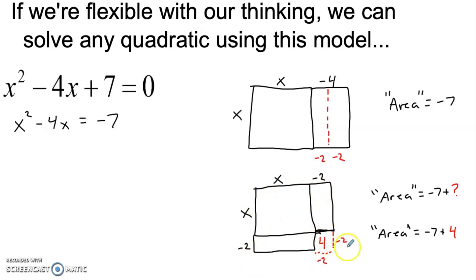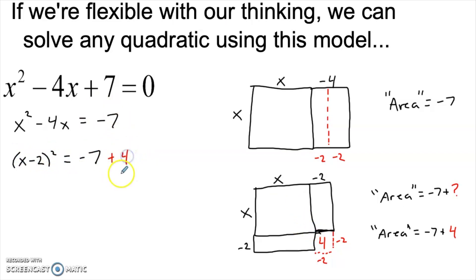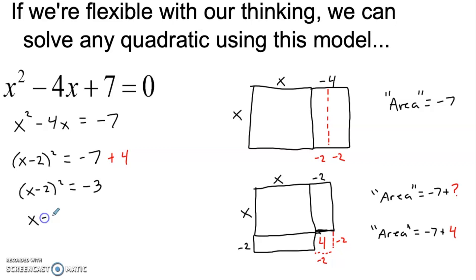If you take a minute to think about it, this will always be a positive number that you're adding, because it'll be a negative times a negative, like in this case, or it'll be a positive times a positive, the way it was in the last problem. And once we have a complete square, we can go back to the algebra. Now we have just one square. And the area used to be negative 7, but we added 4. So we have to add that 4 to balance this side. This is a larger shape than the shape that was there in the beginning. We added exactly 4 units of area, so we have to add that to keep this equation balanced.